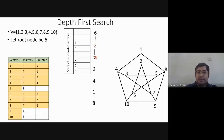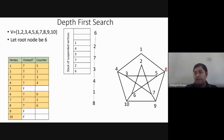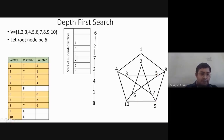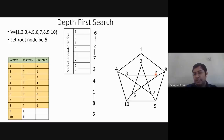From eight we can go to nine and five; one is already visited. We go to five — counter value seven, five is added to the stack. From five we can go to three and six, but both are already visited. So we have no other vertex to explore from five without backtracking.